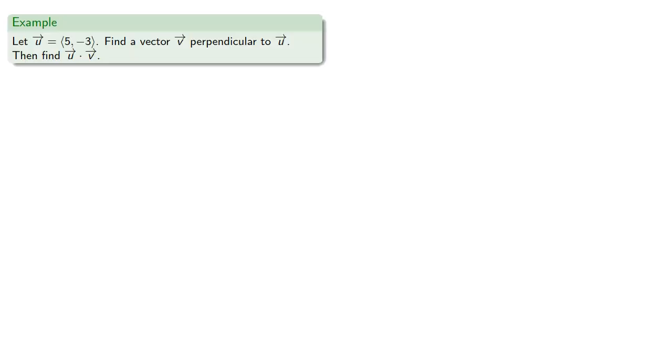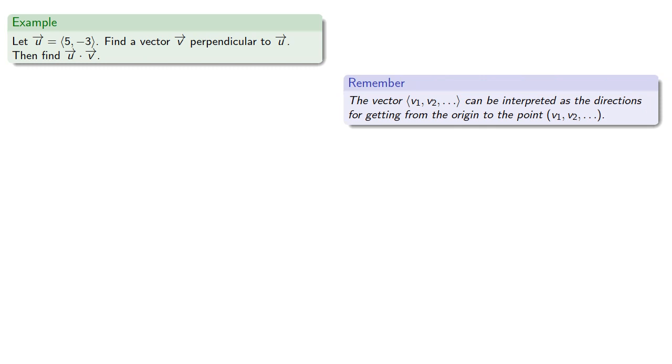Well, let's find out. Suppose we have a vector and we want to find a vector that is perpendicular to it. Remember the vector can be interpreted as the direction for getting from the origin to the point with the same coordinates. So this vector tells us how to get from the origin to the point.